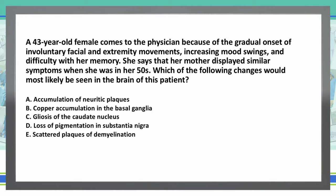Let's take a quick look at our answer choices. A: Accumulation of neuritic plaques. B: Copper accumulation in the basal ganglia. C: Gliosis of the caudate nucleus. D: Loss of pigmentation of the substantia nigra. Or E: Scattered plaques of demyelination. Take a minute, read the question and answer choices again.